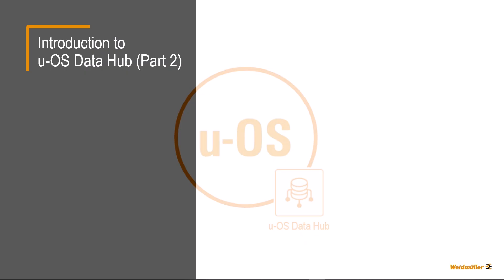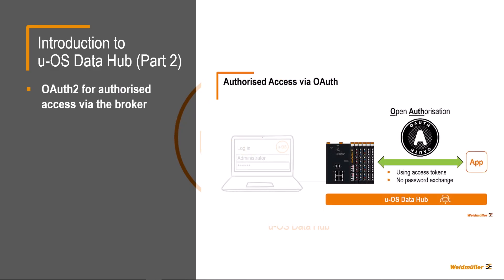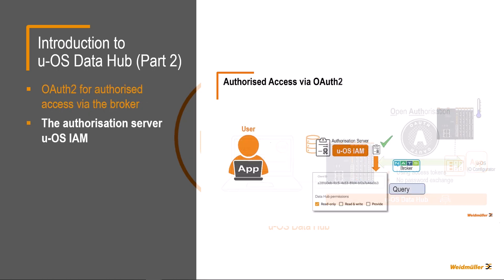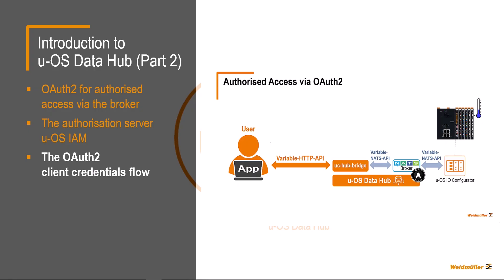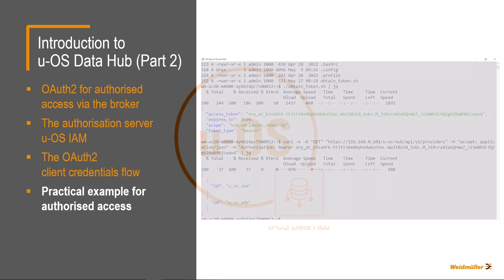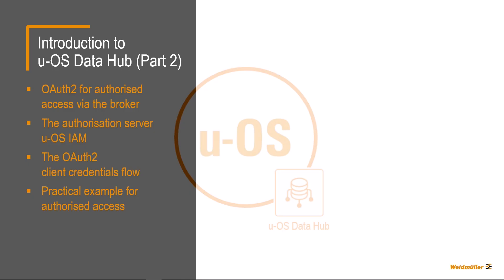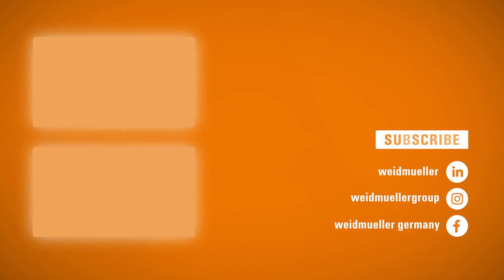This tutorial has given you a first insight into how authorized access to the Data Hub works. The most important points are: we have seen what OAuth is and how this procedure enables authorized access via the broker; we introduced the UOS IAM authorization server and its tasks; we explained the client credentials flow from sending a request with a token through to the response; and finally, we used a practical example to demonstrate all of this. Find out more about the UOS Data Hub in our next video. See you then.